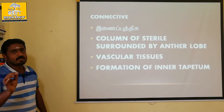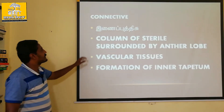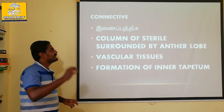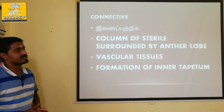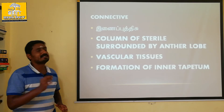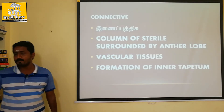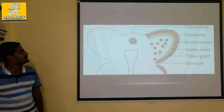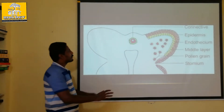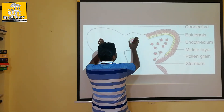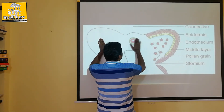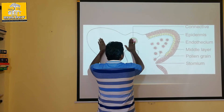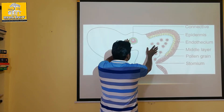This is the most important point. There is a column of sterile cells surrounded by the anther lobe. The anther lobe is on the side, and the structure is connected to the anther lobe.